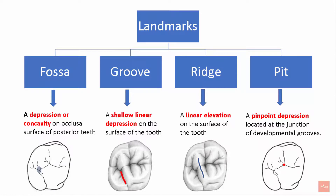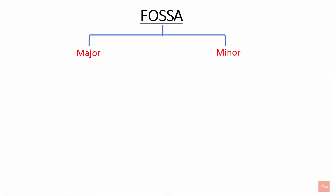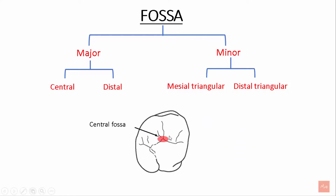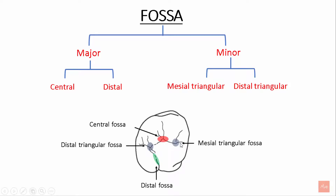Now let's learn about all these landmarks in detail. Regarding fossa, there are two major and two minor fossae. The two major fossae are the central fossa and the distal fossa. The two minor fossae are the mesial triangular fossa and the distal triangular fossa.